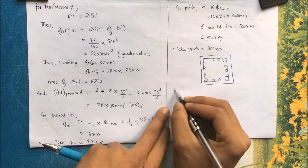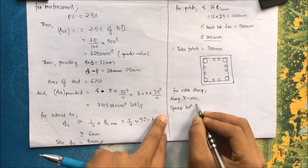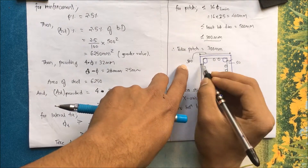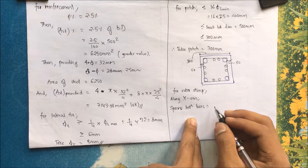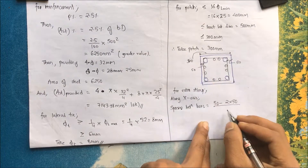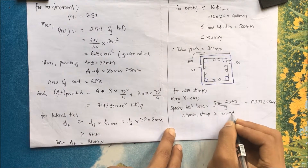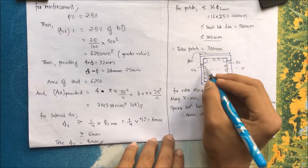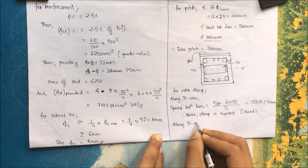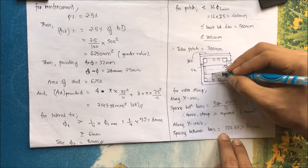For the detailing check along the x-axis, spacing between bars = (500 − 2 × 50) / 3 = 133.33 mm, which is greater than 75 mm, so an extra stirrup is required. Providing a closed-type stirrup. Similarly, spacing along the y-axis is also greater than 75 mm, so a closed stirrup is provided along the y-axis as well.